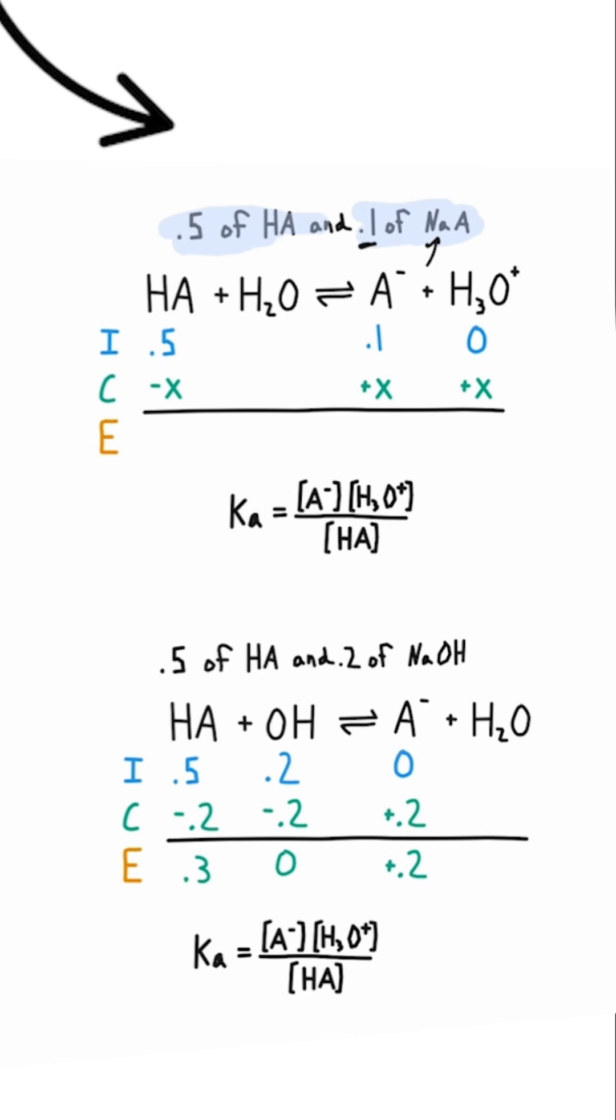For example, if we add 0.1 moles of sodium and our conjugate base, then we will have 0.1 moles of the conjugate base to start off with if we were to do an ICE table for this.